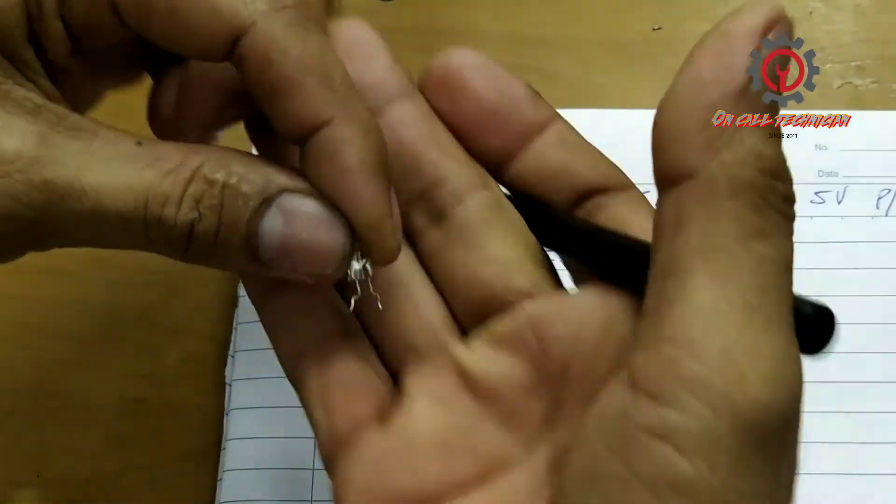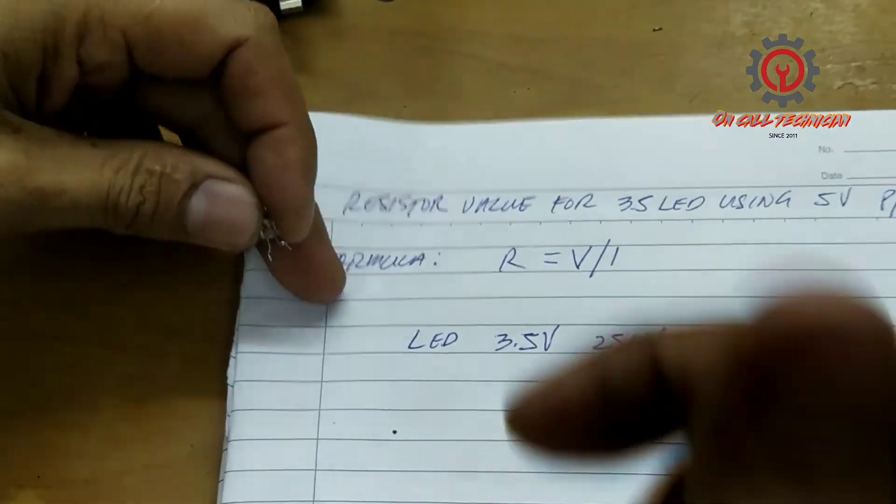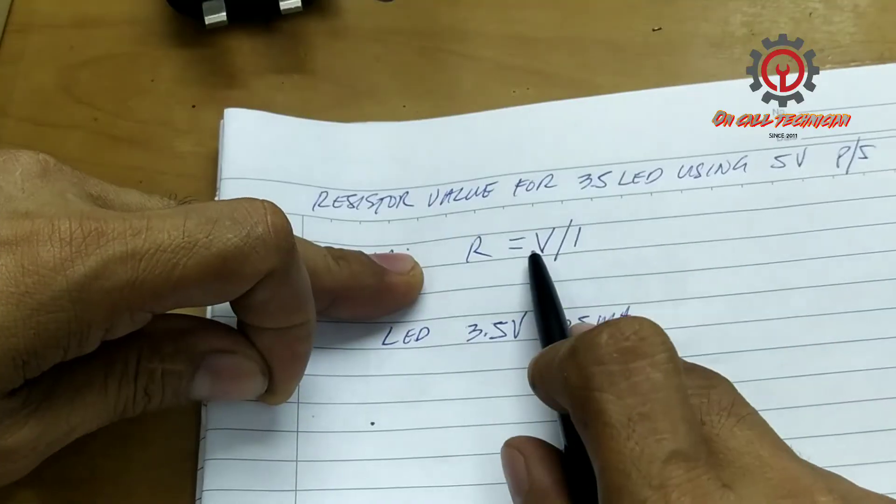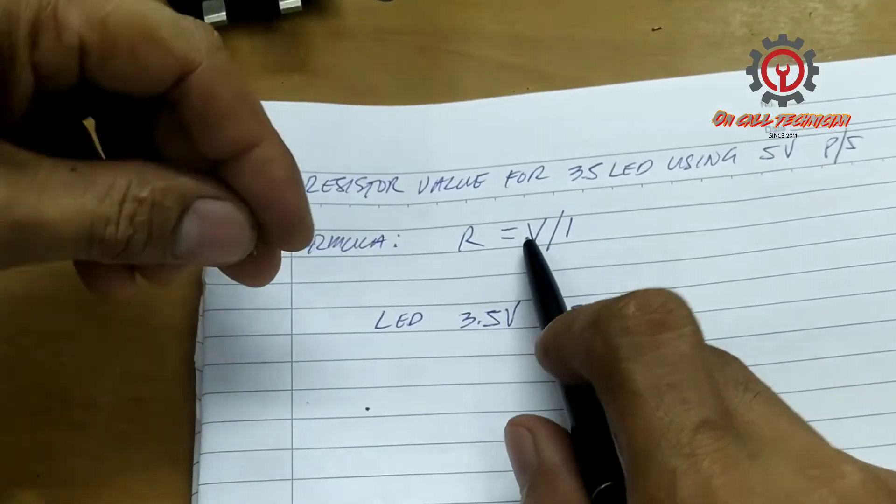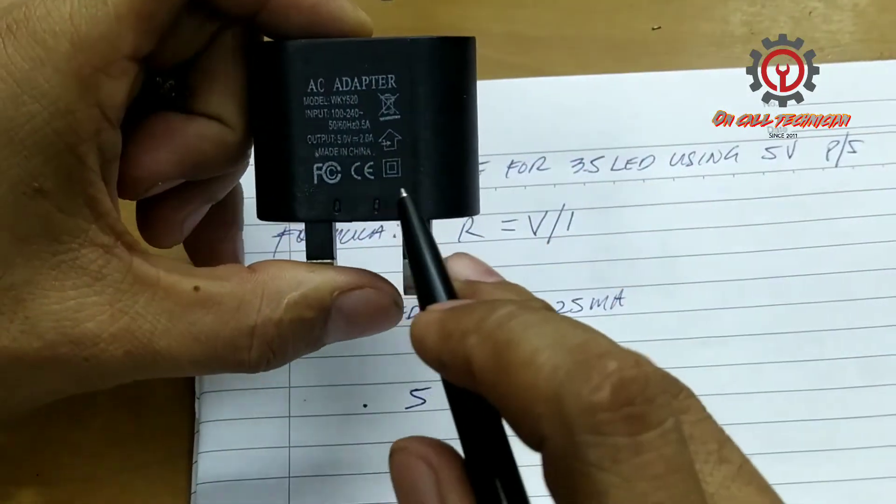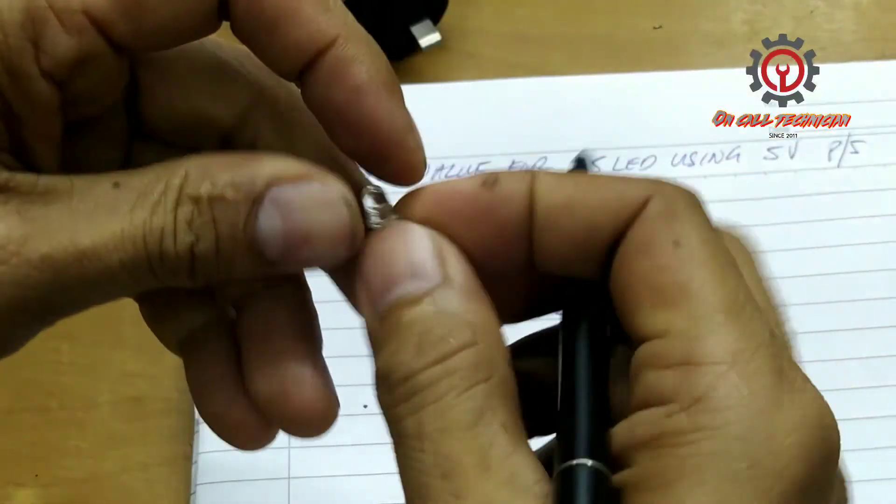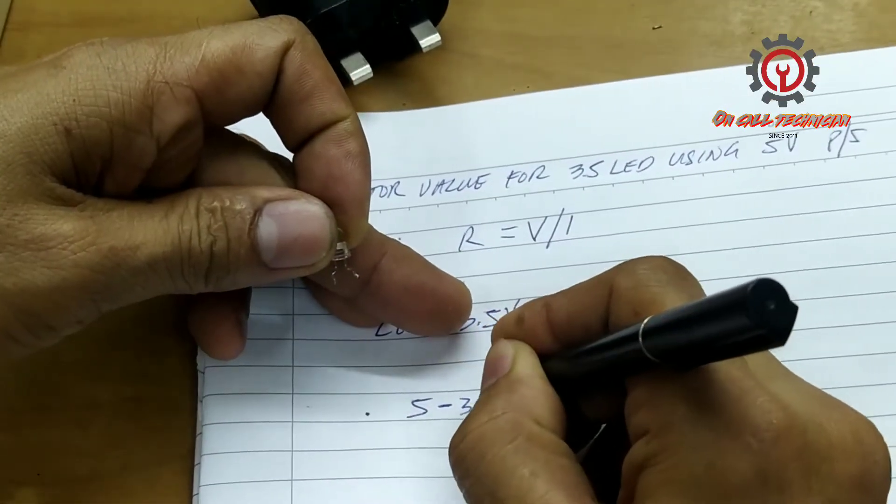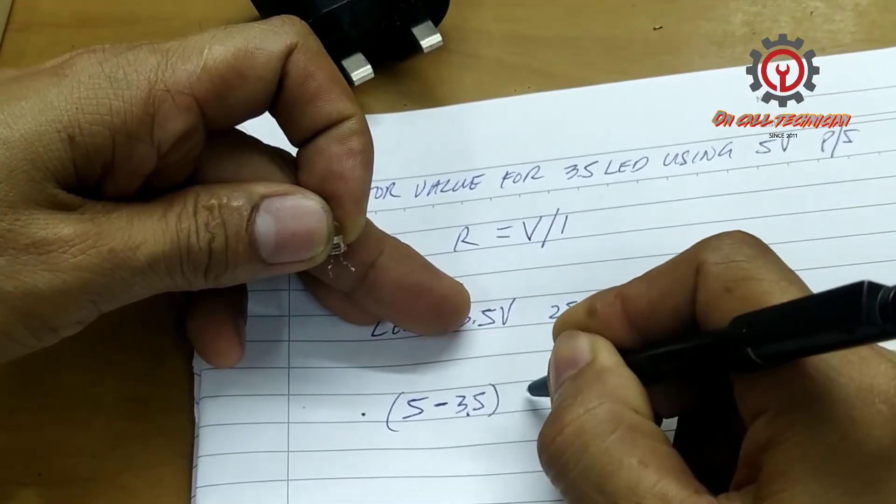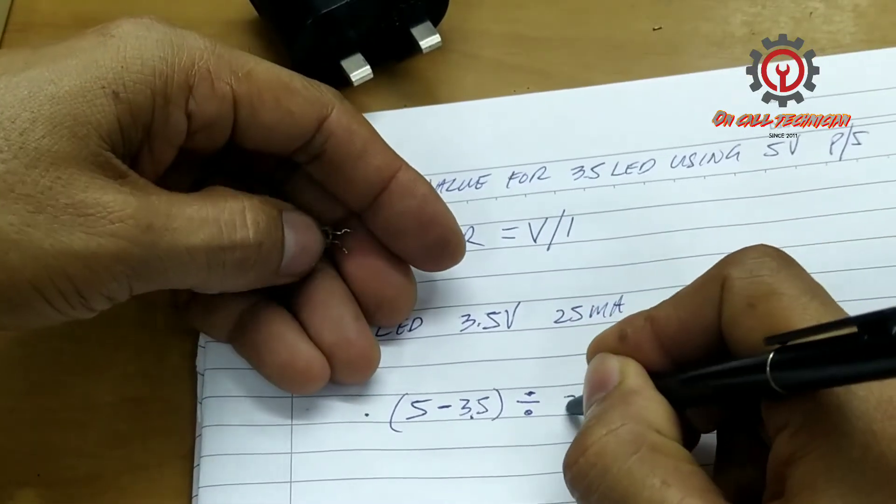The color differs in voltage, so this is white. Using this formula, ibig sabihin ngayon yung 5 volts, this one, 5 volts minus 3.5, 3.5 divided by 25 milliamps.